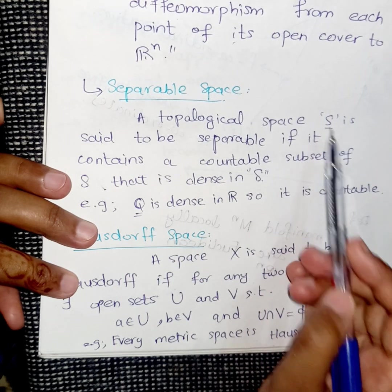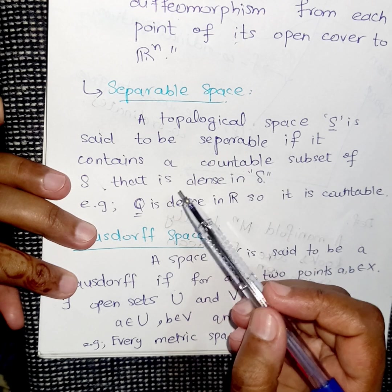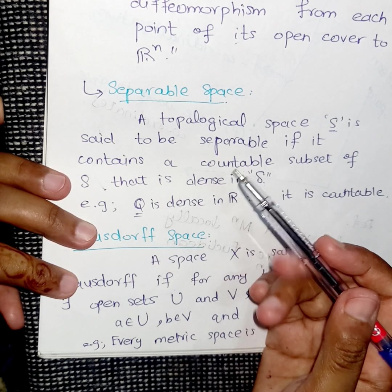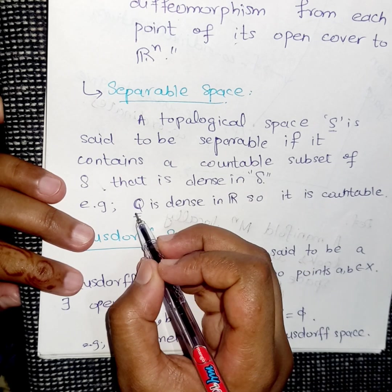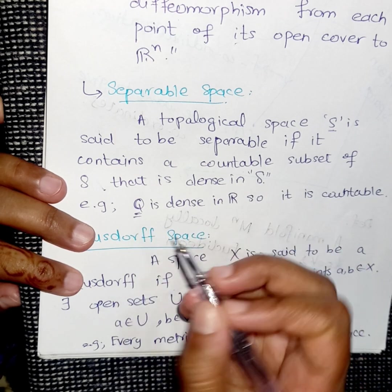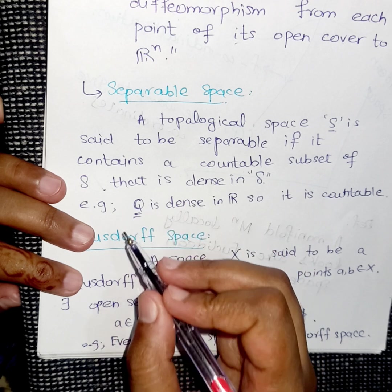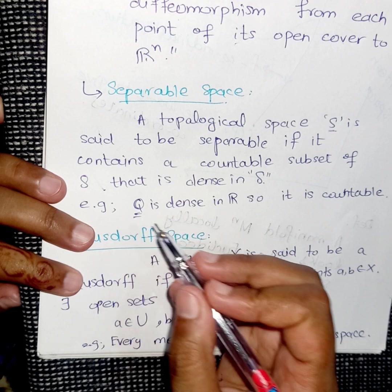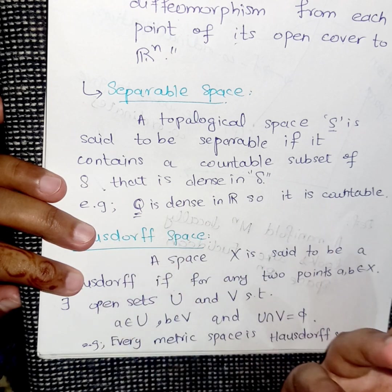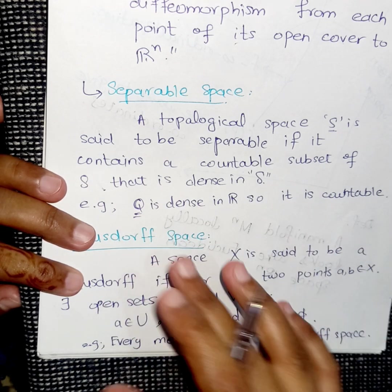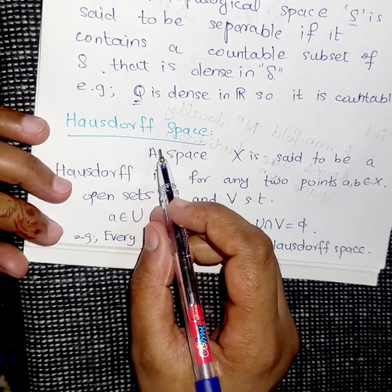For example, in the real line, the set of rational numbers Q is countable and it is also dense in the set of real numbers. Therefore, we say that ℝ is a separable space. In a similar way, we have a definition of a Hausdorff space.